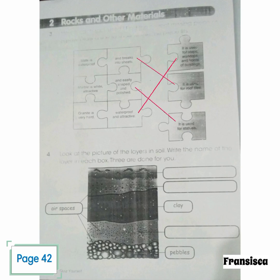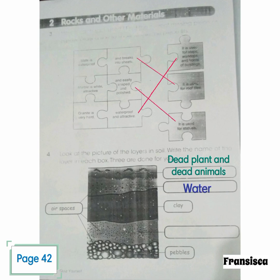Number 4. Locate the picture of the layers in soil. Write the name of the layer in each box. Three are done for you. 1. Dead plants and dead animals. 2. Water. 3. Clay. 4. Sand. 5. Pebbles.